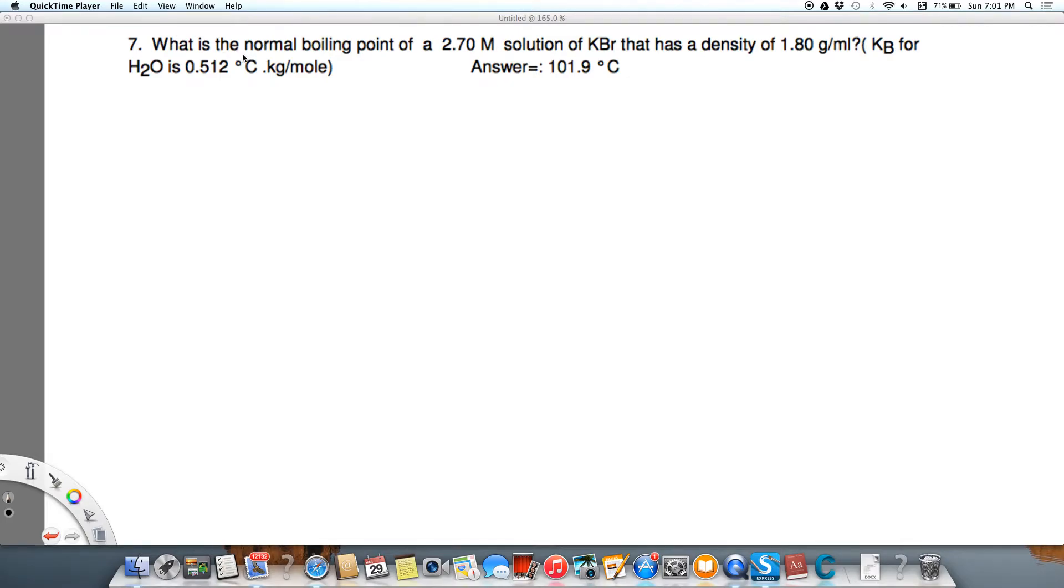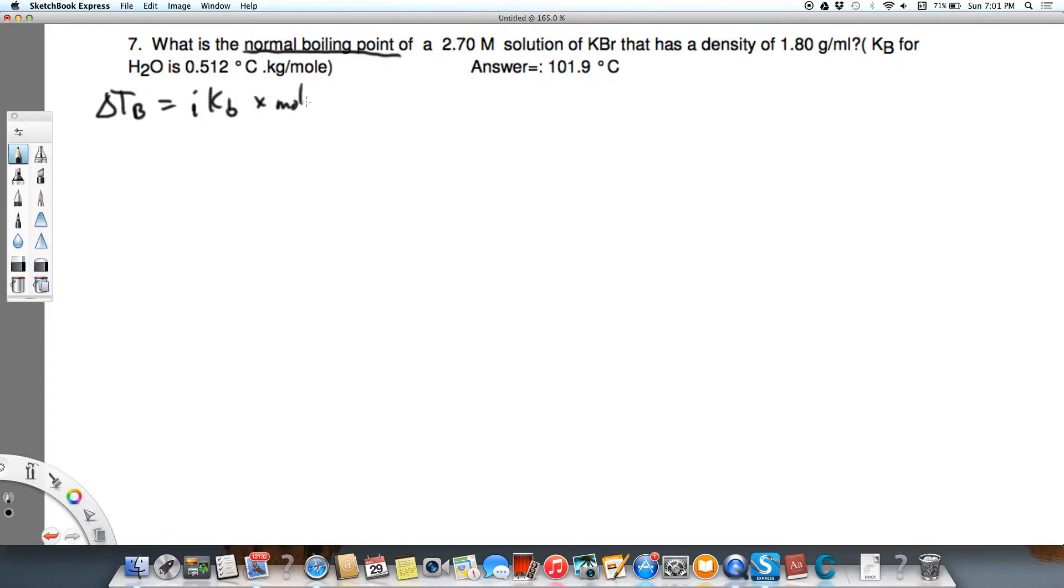Okay, so we are looking for the normal boiling point of a 2.7 molar solution of KBr that has a density of 1.80 grams per milliliter. And we know that delta Tb, this is our equation, equals I Kb times molal. We know that, and that's the equation we're going to use.